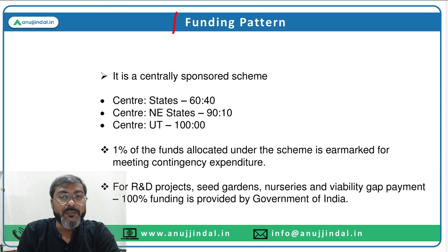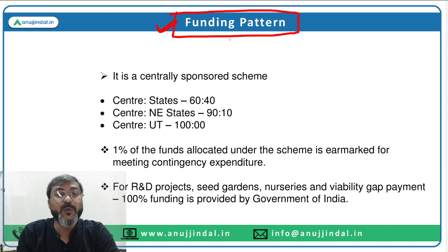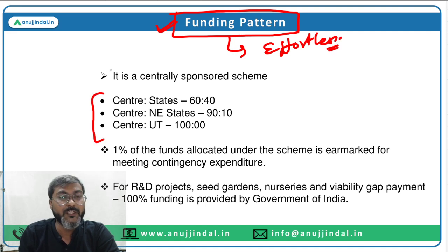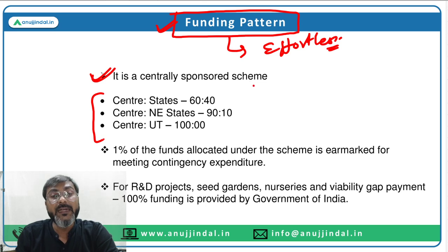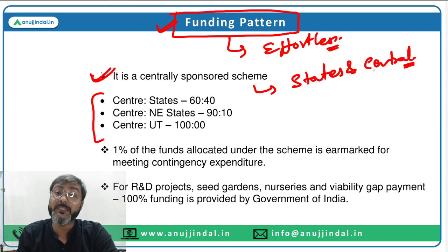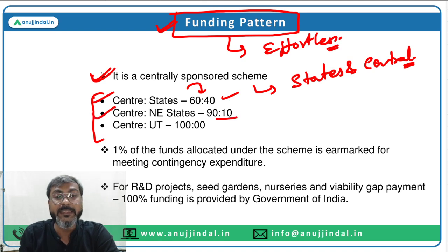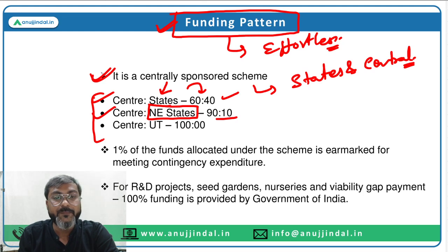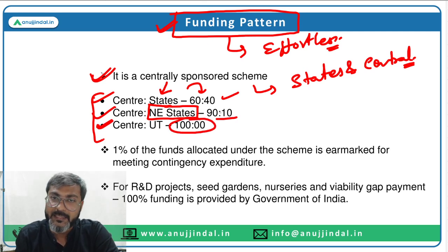Regarding the funding pattern — it is a centrally sponsored scheme, which means funding is shared between the states and the central government. For the centre and normal states, the ratio is 60:40. For the centre and northeastern states it is 90:10 — and please remember, it is northeastern states only, not northeastern and Himalayan states. Himalayan states are covered under the general states category. For union territories, 100% funding is provided by the central government.